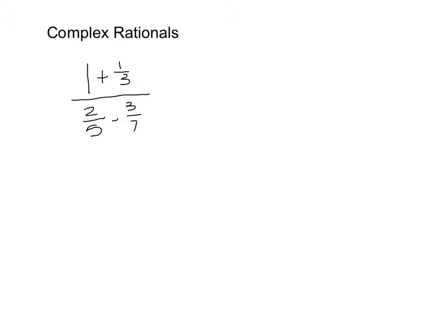If I want to simplify the numerator, I need to write 1 as something over 3. The least common denominator is 3, so I need to multiply 1 by 3 over 3. In the denominator, I need to have the least common denominator. For 5 and 7, it's 35. So I need to multiply the first fraction by 7 over 7 and the second fraction by 5 over 5, giving a common denominator of 35. I end up with 3 over 3 plus 1 over 3, over 14 over 35 minus 15 over 35.